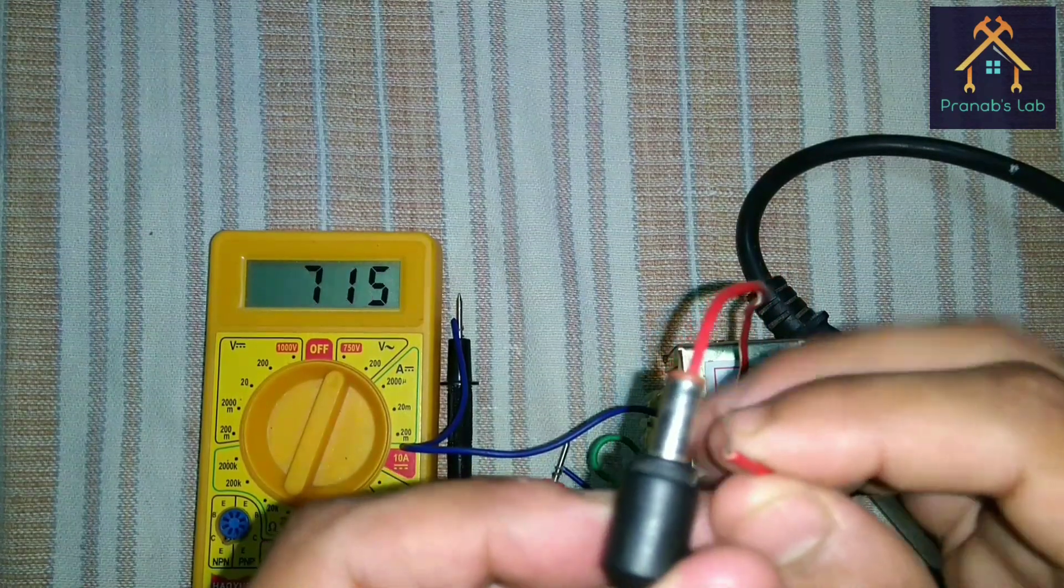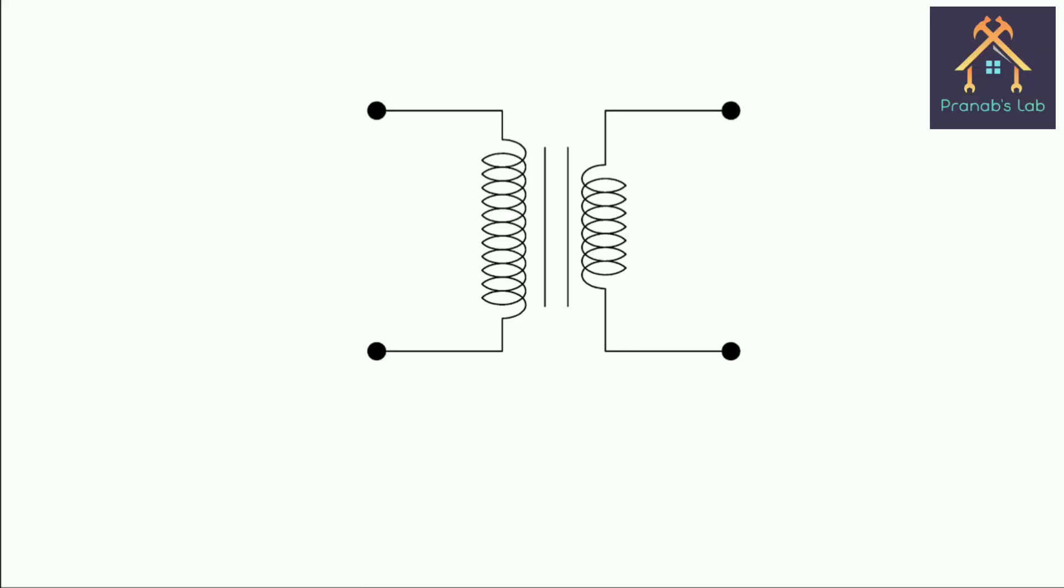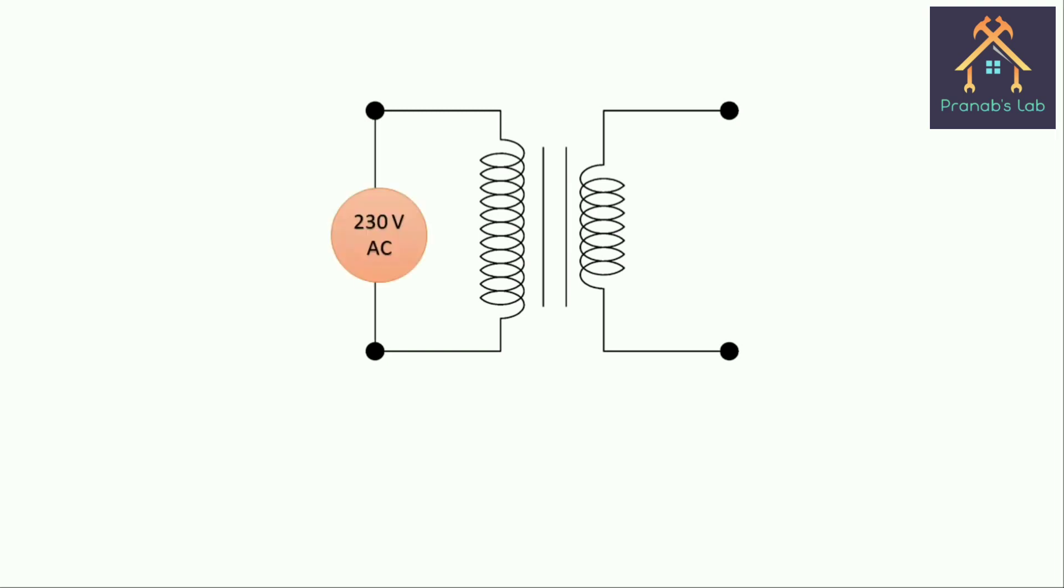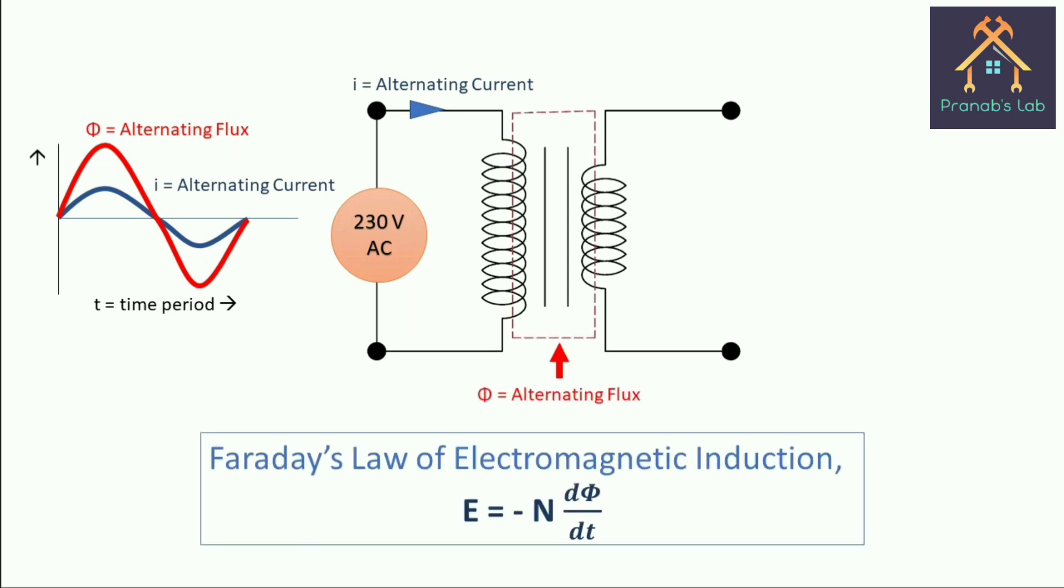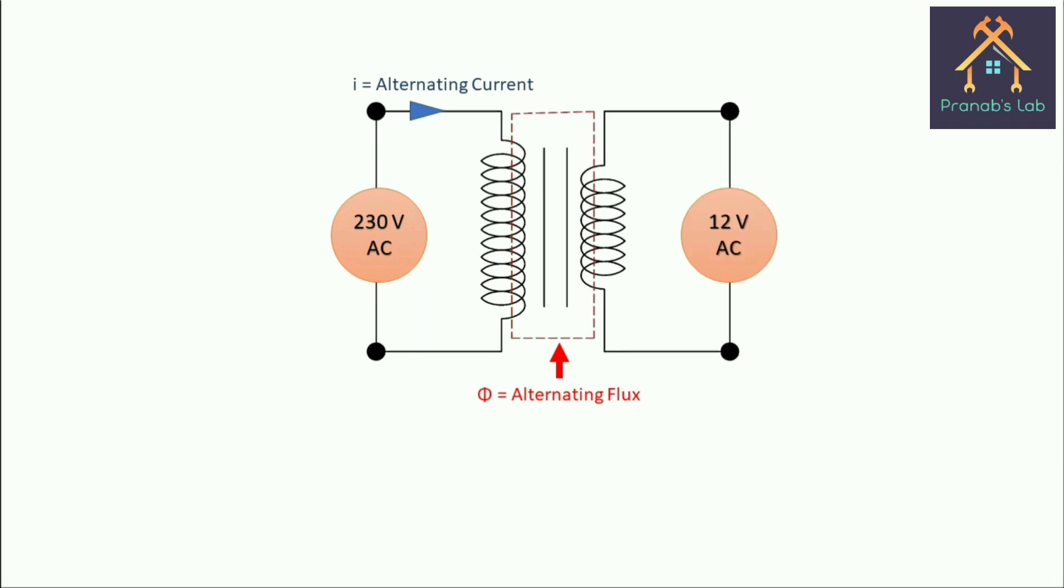But why does the transformer behave like this? Let me explain graphically. Assume this is the transformer when we connect the input terminal of the transformer with 230V AC supply. Then an alternating current flows through the primary coil and creates an alternating flux. According to Faraday's law of electromagnetic induction, whenever an alternating flux links with the secondary coil, it produces an EMF. Please note the keyword alternating flux. And also keep in mind that only alternating flux can produce voltage.